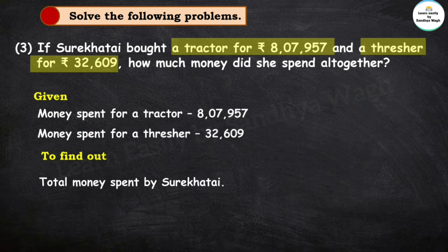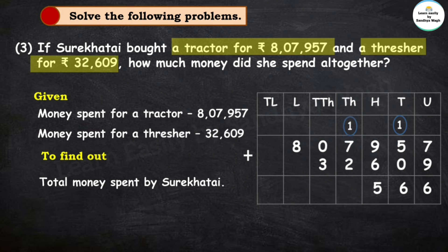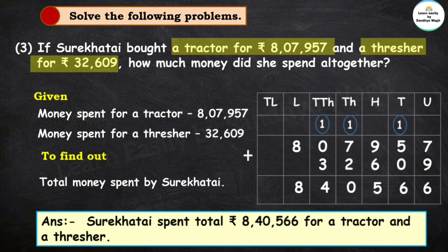We need to find out the total money spent by Surekhatai on the tractor and thresher. We will use addition. So 7 plus 9 is 16, 5 plus 0 plus carry 1 is 6, 9 plus 6 is 15 carry 1, 7 plus 2 plus carry 1 is 10, carry 1, 0 plus 3 plus 1 is 4, and 8. So the final answer is Surekhatai spent total Rs. 8,40,566 for a tractor and a thresher.